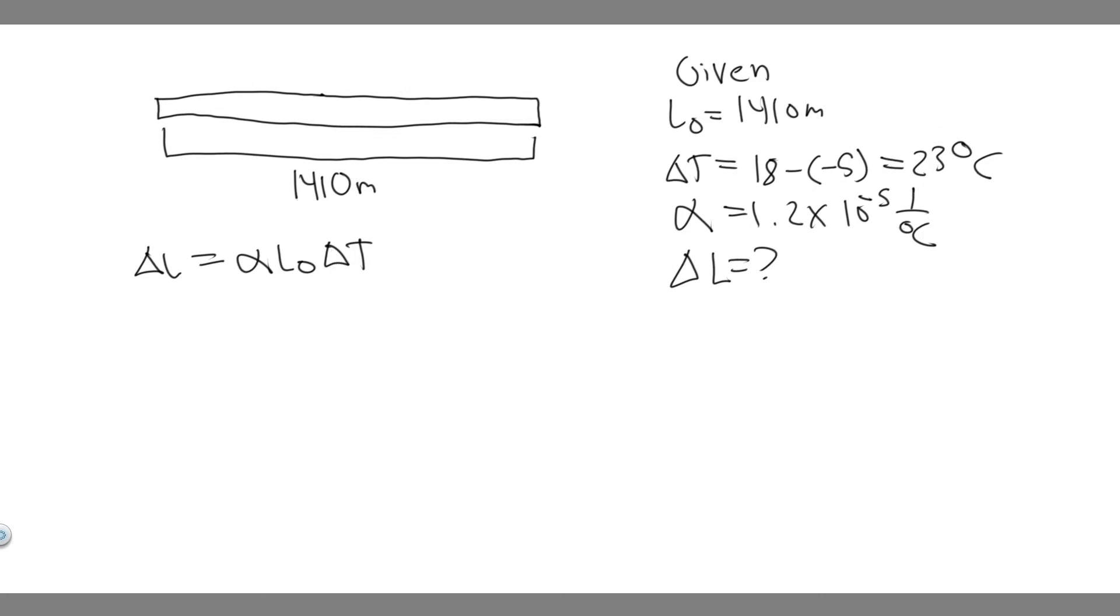L sub 0 is the initial length. In this case, we know they tell us it's 1,410 meters long. So basically L0 is 1,410 meters.